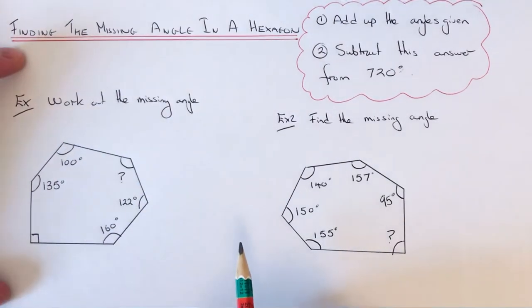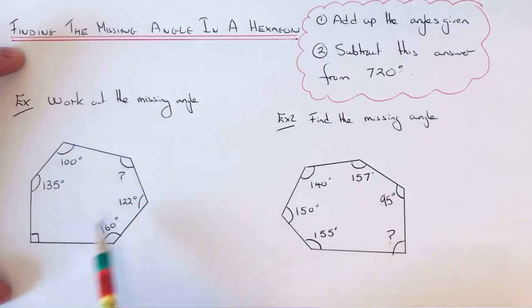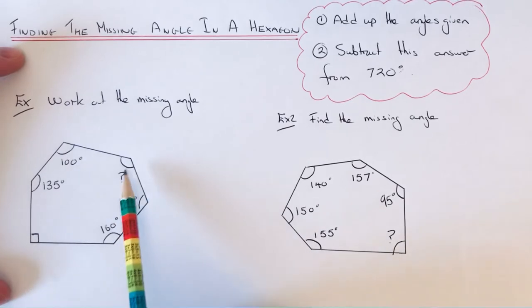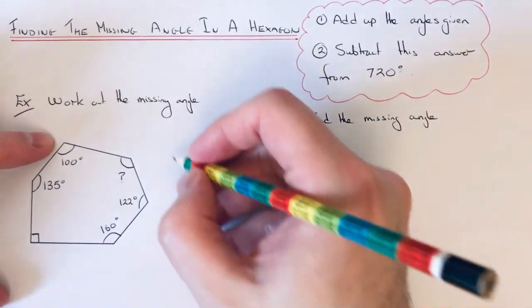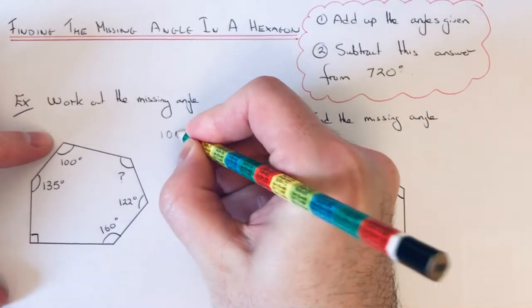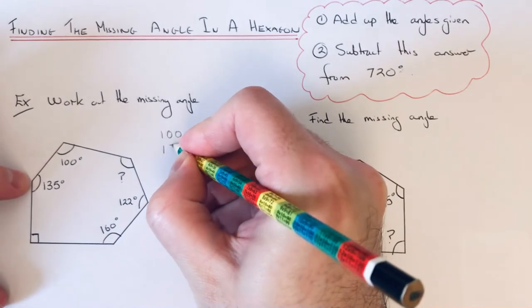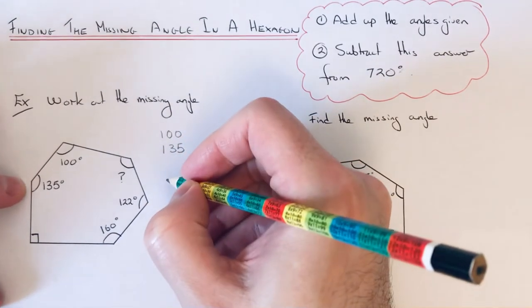We've got a hexagon and we need to work out this angle here. If we just add up the angles that we have, I'm going to go around the shape so I don't miss any out.